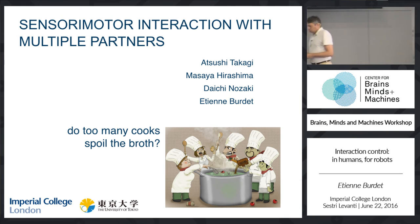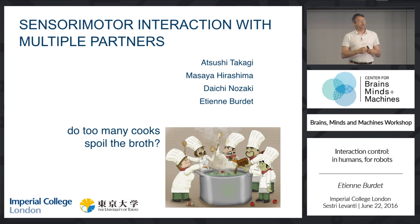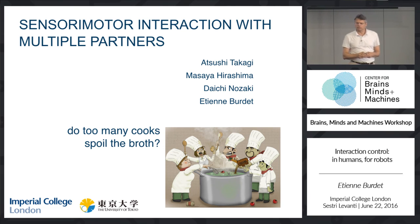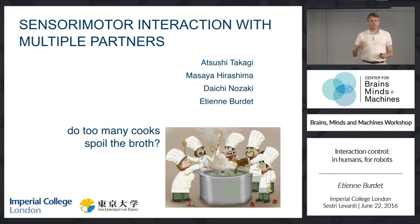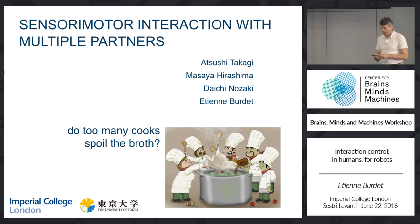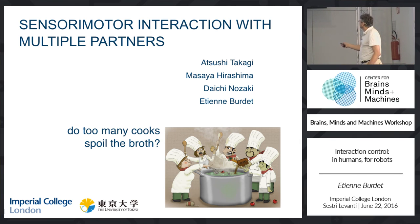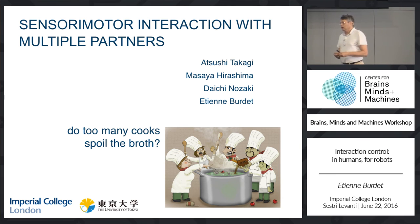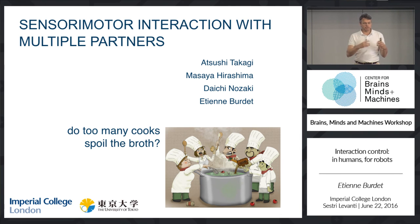A question many people asked when we presented these results: what happens with three or four people? A student was going to Japan, they had four robots, so we tried. The results are very interesting. What we expected is that with several people, you get disturbance from coordinating with multiple people.